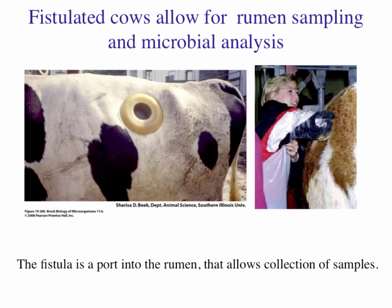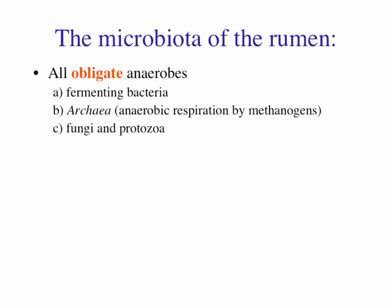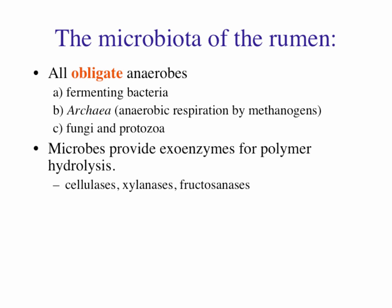The organisms present in the rumen are obligate anaerobes—fermenting bacteria. We also have archaea involved in respiratory methanogenesis, as well as eukaryotes: fungi and protozoans. All those organisms are present in the system. They secrete exoenzymes to allow the initial digestion of polymers into monomers, which are then transported inside the cell. This is where everything learned in class about enzyme export and nutrient transport mechanisms comes back into play.